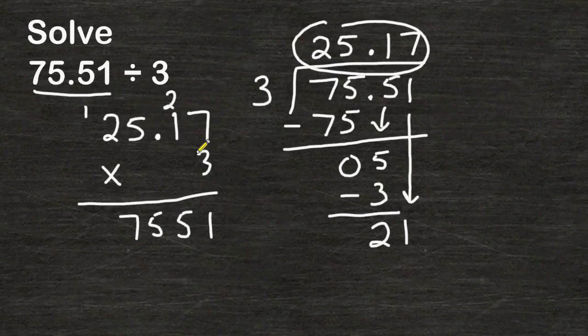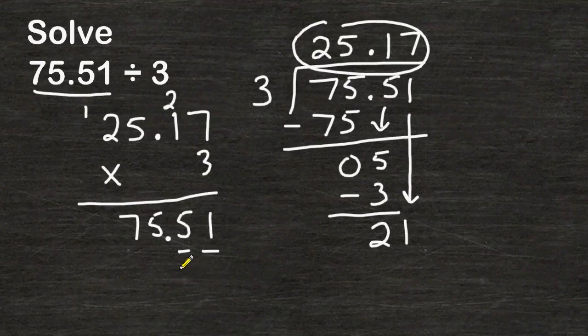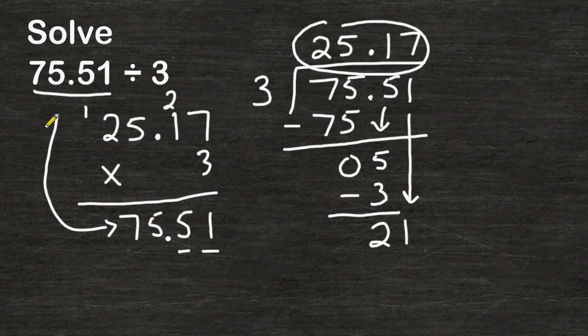And we have two place values after our decimal so the same thing must be true for our answer. So we must write the decimal in this location so we also have two place values after our decimal. And notice we did get the same dividend that we started with therefore we must have performed the division correctly.